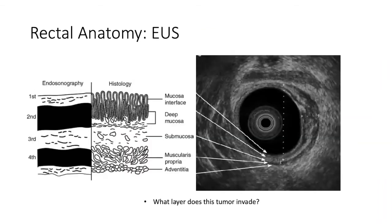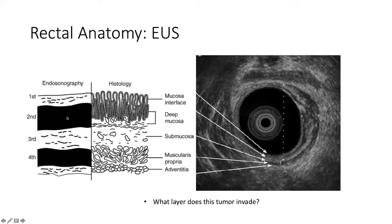Something that will come up frequently is endorectal ultrasound or rectal EUS. It can be difficult for a lot of people, especially because we talk about light and dark bands, and then the probe itself has many layers you don't need to worry about. The anatomy we're interested in is out in the wall itself. Basically, the mucosa is your first bright layer. Every muscular layer should be dark because muscle has lots of water content. The first dark layer will be your muscularis mucosa — labeled as the deep mucosa — and then the submucosa, muscularis propria, and then the adventitia.